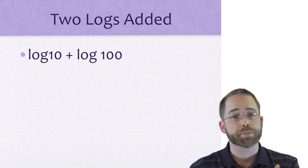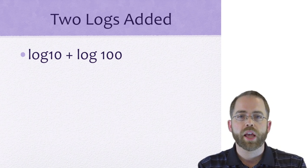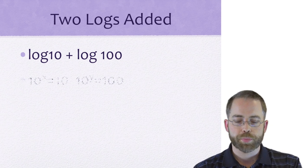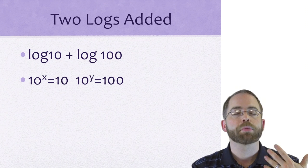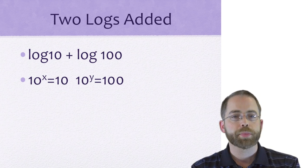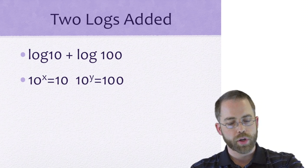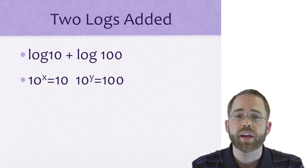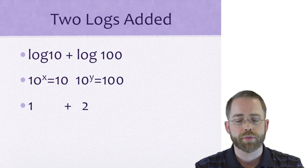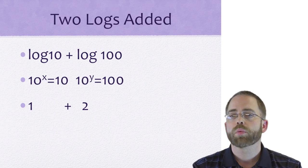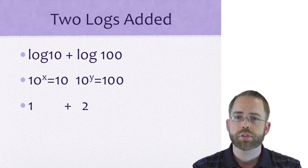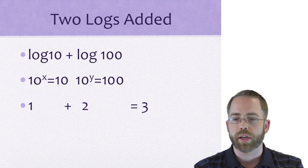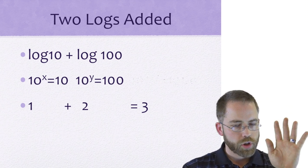For example, when you've got log 10 plus log 100, that's pretty able to be translated quickly as saying: what exponent do I put on 10 to get 10, plus what exponent do I put on 10 to get 100? The answers should be straightforward: 1 and 2. What's 1 plus 2? It's 3. So that's not super duper rocket science.